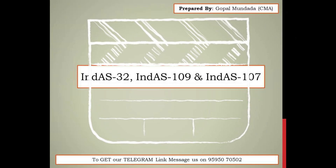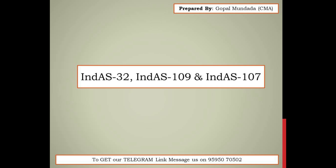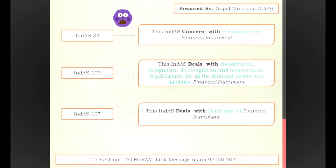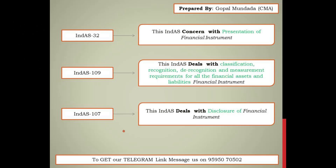Hello friends, welcome back on the RCA channel. Today we are going to discuss the Indian Accounting Standards covered under study note number 5 of paper number 17 of the semifinal. In this chapter, there are three Indian AS: Ind AS 32, Ind AS 109, and Ind AS 107. I know there is a question in your mind - why do we learn all these Indian AS together? I will try to resolve that doubt.